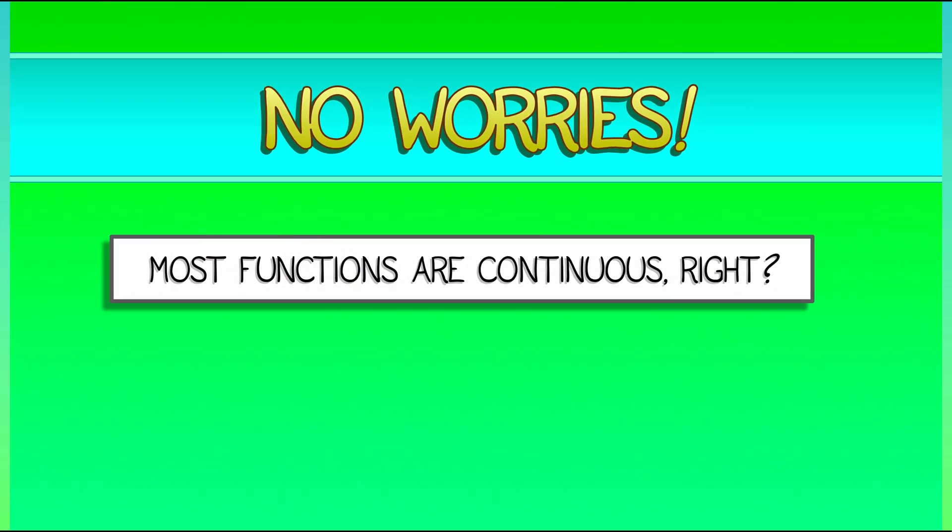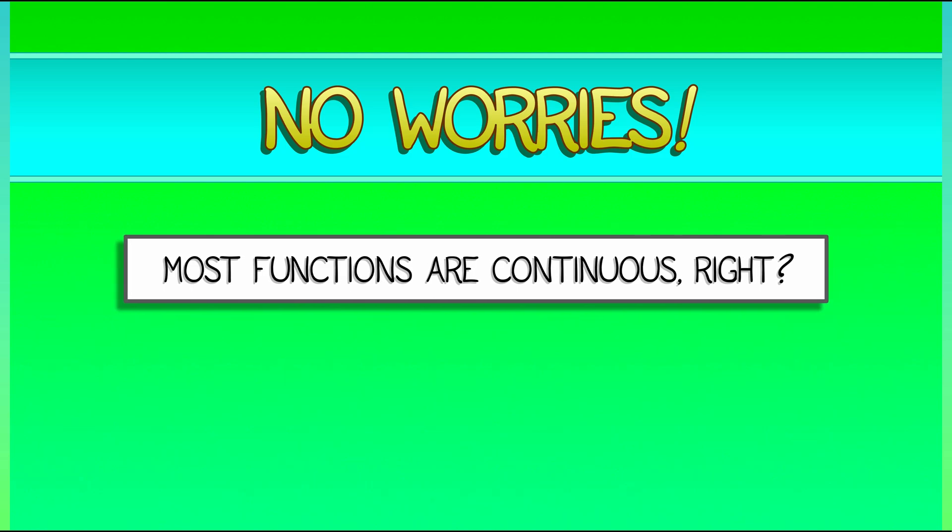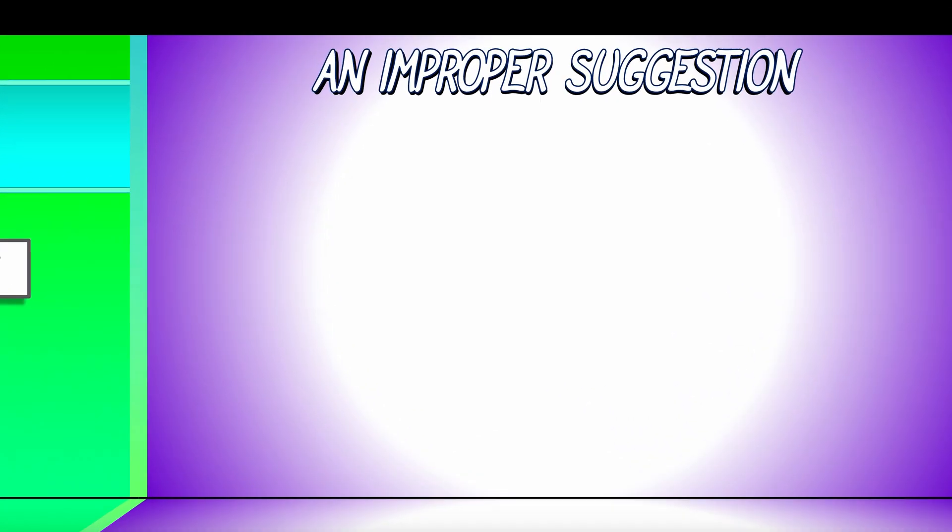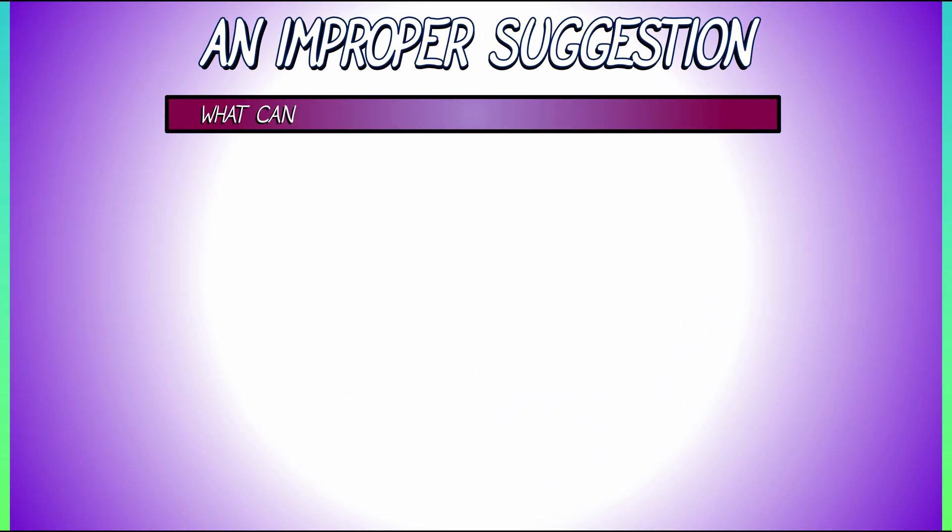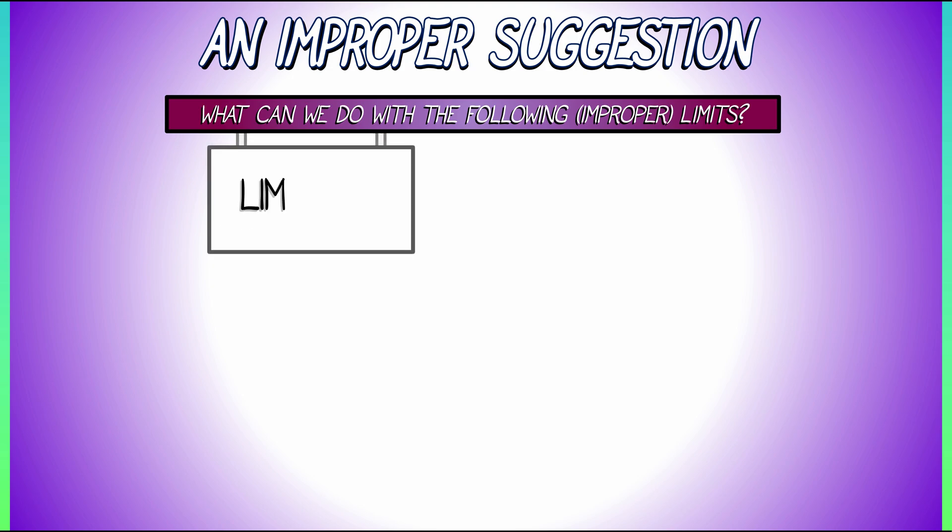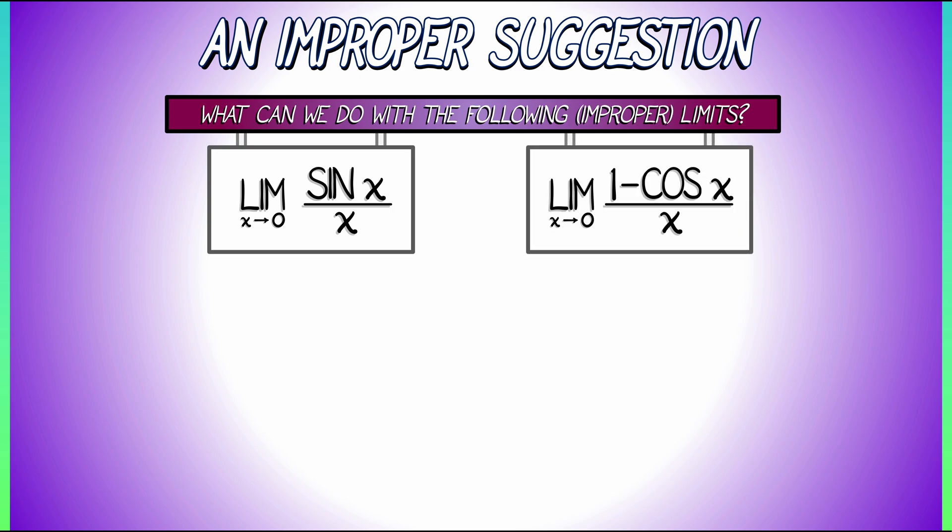Most functions are continuous functions, right? So everything's going to be great, especially using the chain rule for computing limits. That may be. But still, you have to be careful. What about the following improper limits? Consider the limit as x goes to 0, sine of x over x. Consider the limit as x goes to 0 of 1 minus cosine of x, all divided by x. These are improper limits.